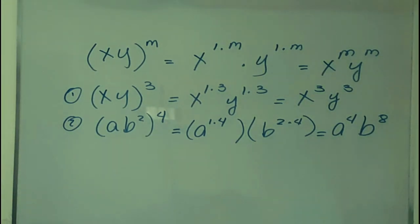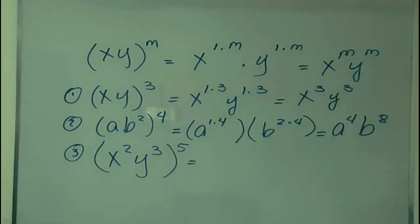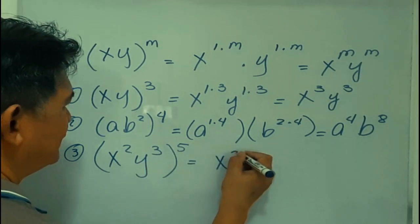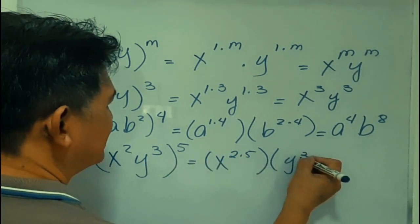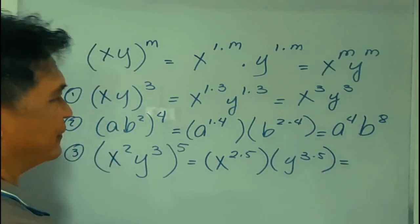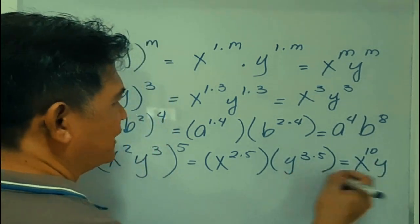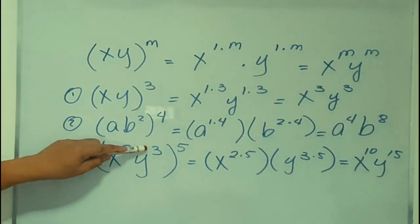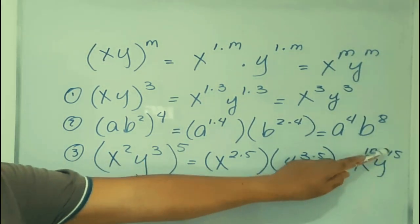We multiply the exponents. Example number 3: x squared times y cubed, all raised to the fifth power. Multiply x: 2 times 5 is 10, giving x to the tenth power. Multiply y: 3 times 5 is 15, giving y to the fifteenth power. So the product of x squared y cubed raised to the fifth power equals x to the tenth power times y to the fifteenth power.